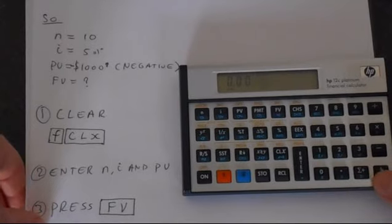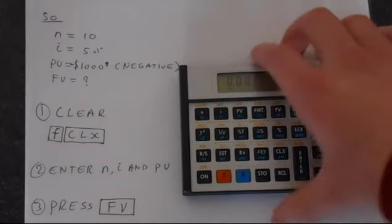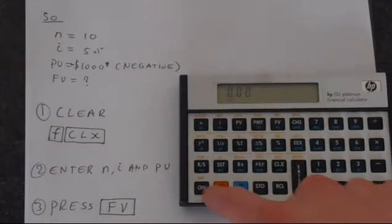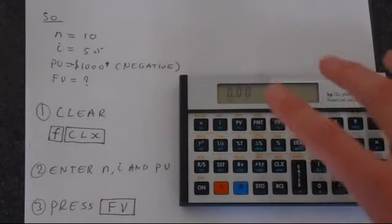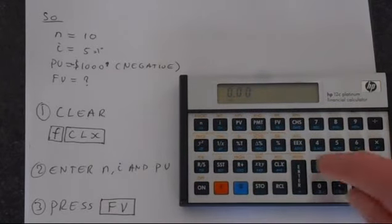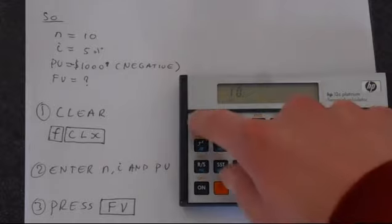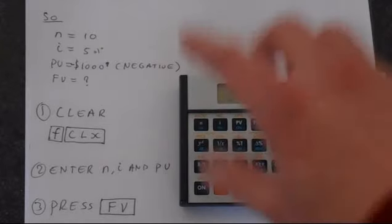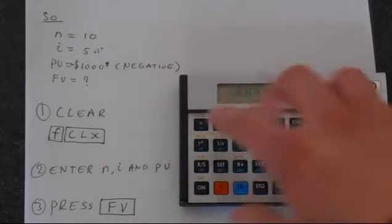So first thing we need to do is enter these into our calculator, that's how we begin the calculation. Just double check that's cleared. So we're putting 10 and put that into N, so press the number first and then your function, or rather your memory, so we're putting 10 into the N memory.